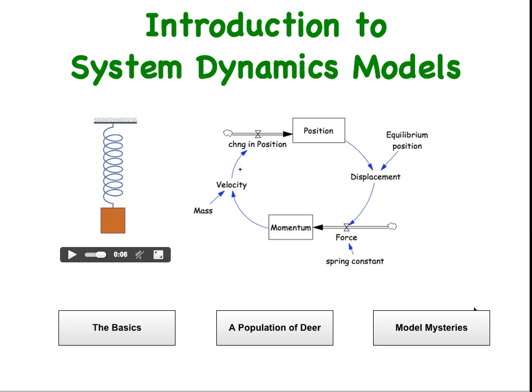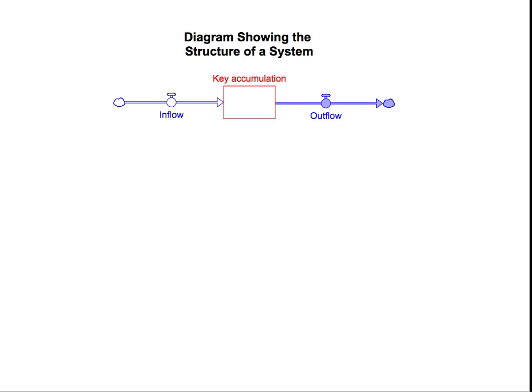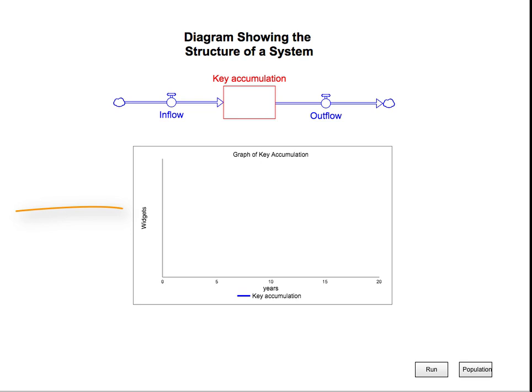Key stocks or accumulations are identified with a box. These stocks can go up and down based on their flows or rates of change. The advantage to moving from a stock-flow diagram to a running model is that you can see what happens to the accumulations in the system over time. So the diagram isn't just a static picture of a system, but rather it becomes dynamic, like a moving machine or organism.